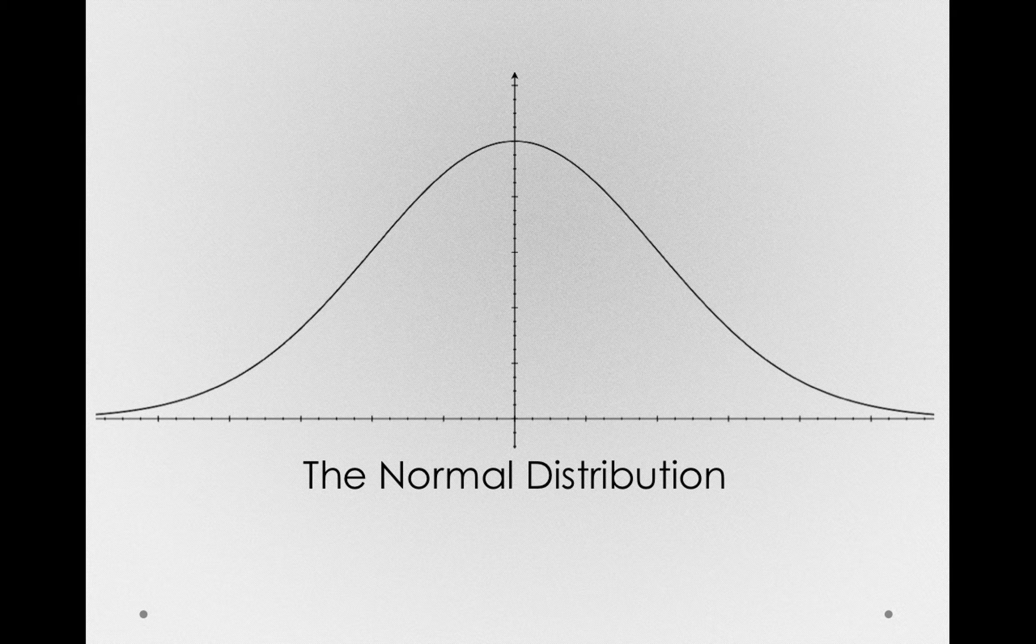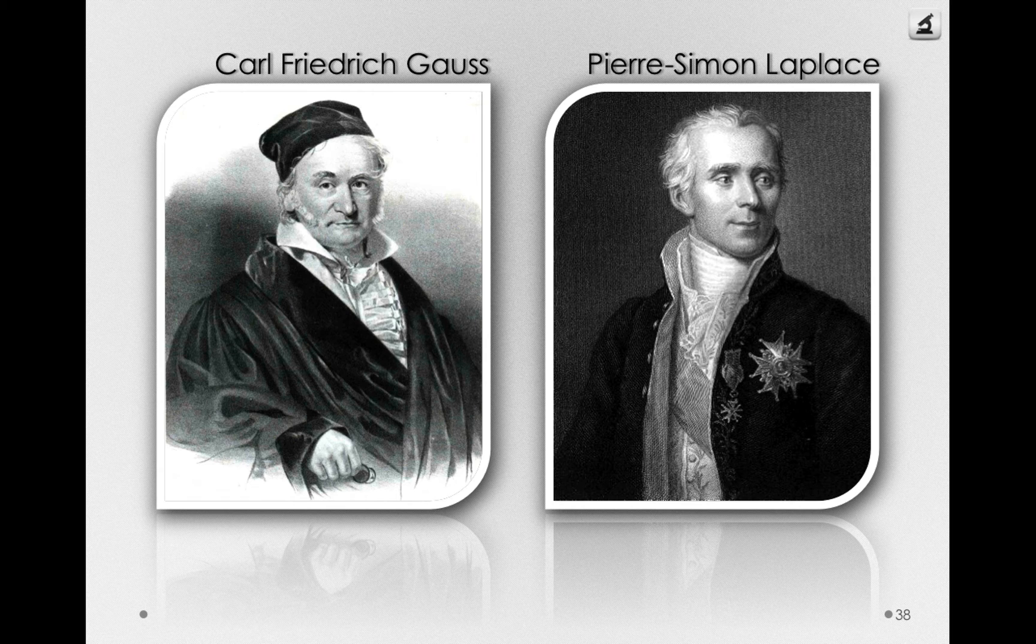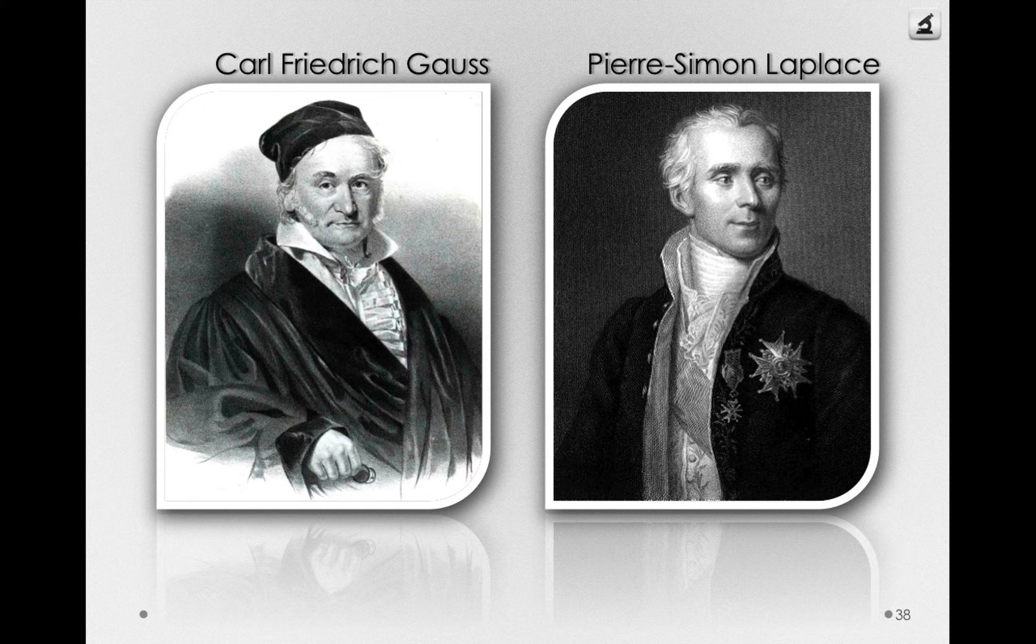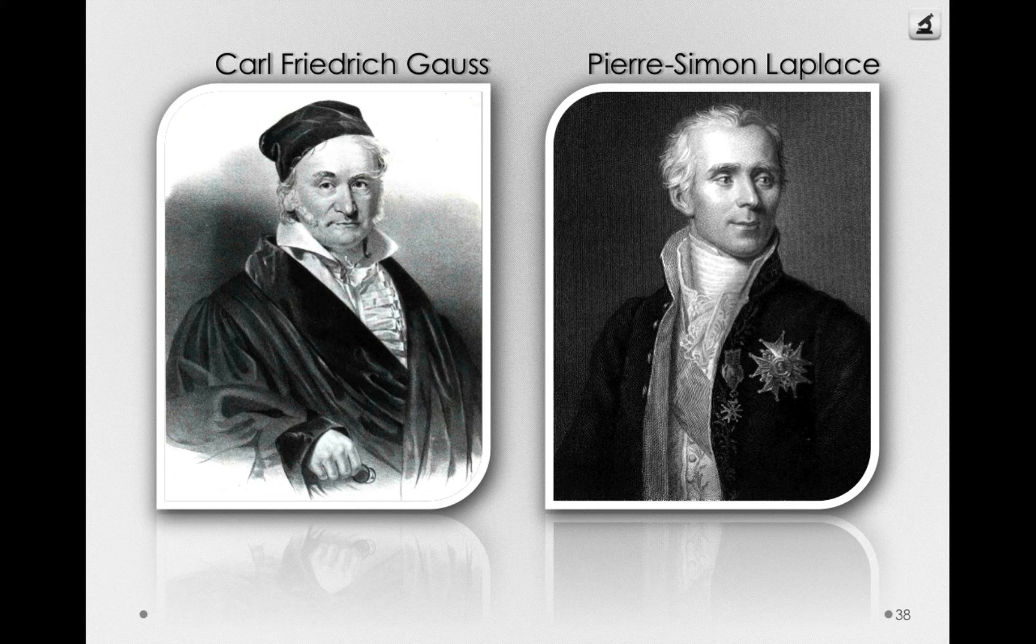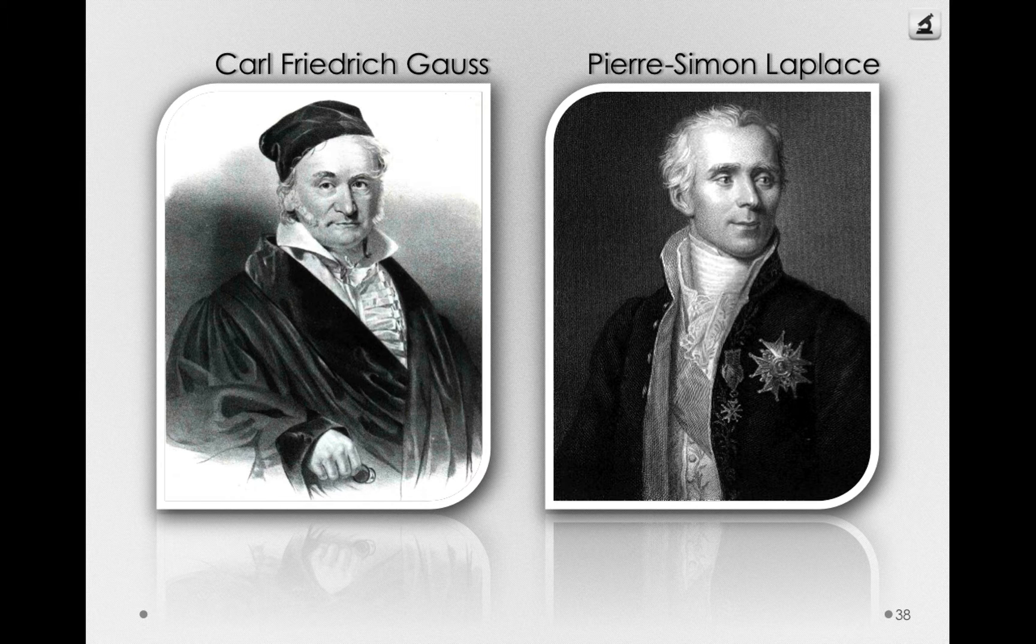The normal distribution was independently described by two individuals, Carl Friedrich Gauss and Pierre Simon Laplace. Gauss was a mathematician and scientist, and in 1809, he wrote a paper describing the normal distribution. If you ever want to feel inadequate about yourself, read about the achievements of Carl Friedrich Gauss.